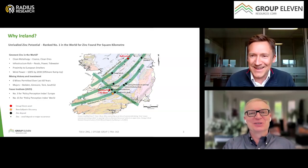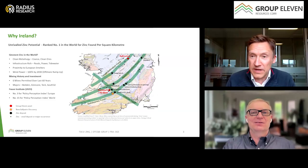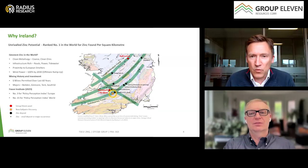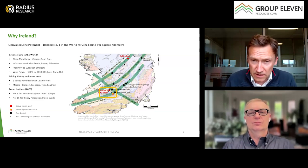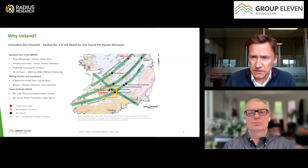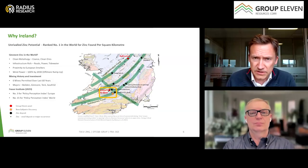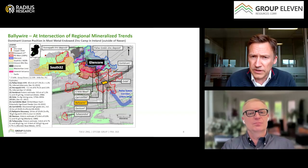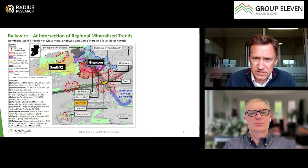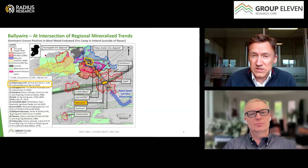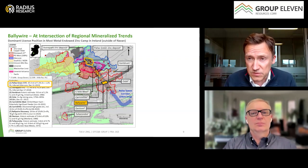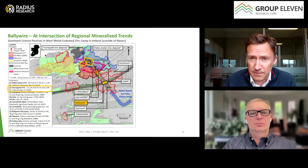The 40-meter hit at 10 percent zinc is a stellar intercept. We are here on the Rathdowney trend, 20 kilometers away from Glencore's Pallas Green deposit, one of the largest undeveloped zinc deposits in the world. That yellow box there is the Limerick area of Ireland. Everything in blue here is Glencore and everything in yellow is South 32. Our Ballywire discovery, the solid yellow box, is only 20 kilometers away from that critical mass.